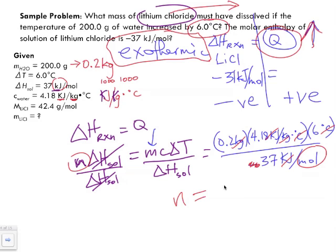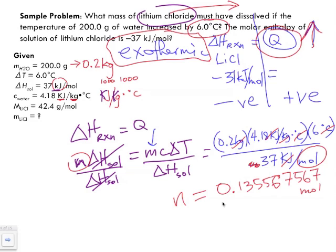When we multiply everything out, we get a value of 0.135675... moles. This is our n value — the number of moles of lithium chloride based on this calculation.